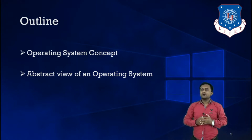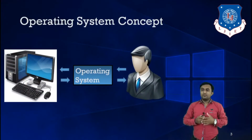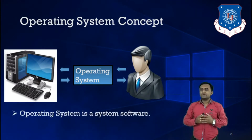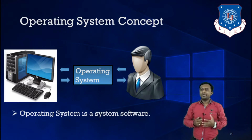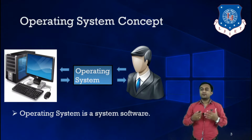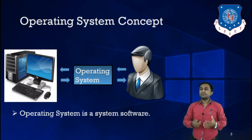What is the concept of operating system? Operating system is nothing but one type of system software. There are two types of software: system software and application software. Application software is designed specifically to achieve some specific task — for example, VLC media player is an example of application software, and Need for Speed is a game designed for gaming purposes.